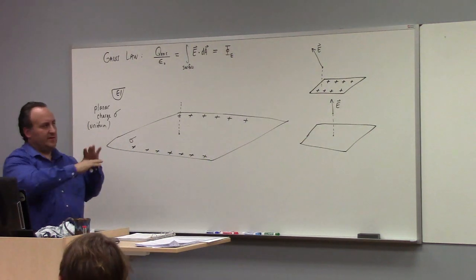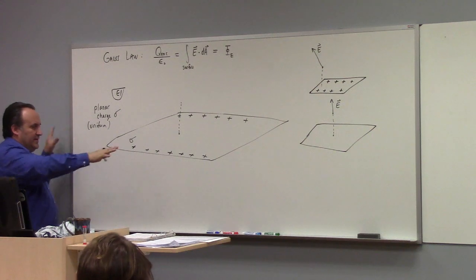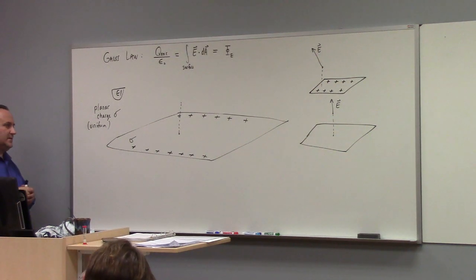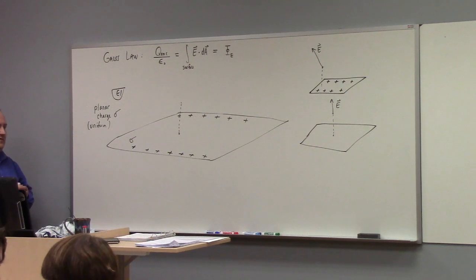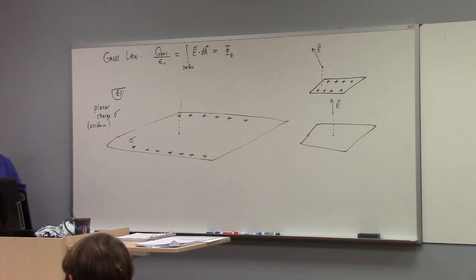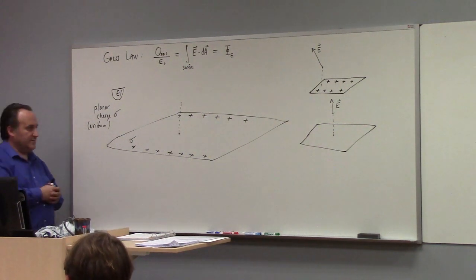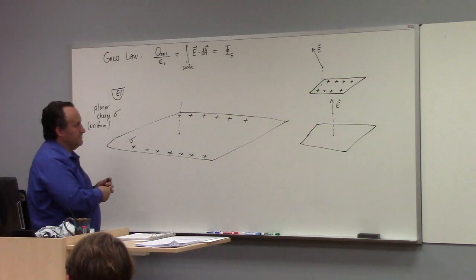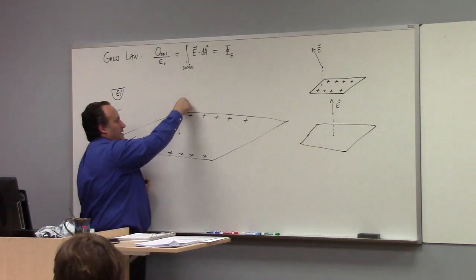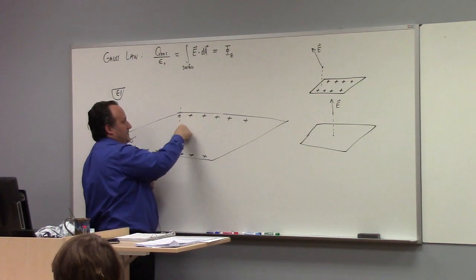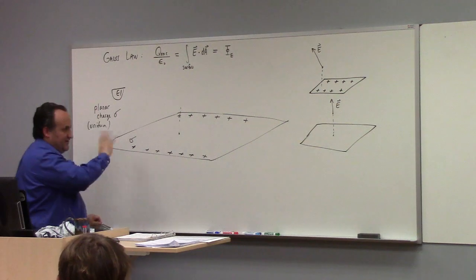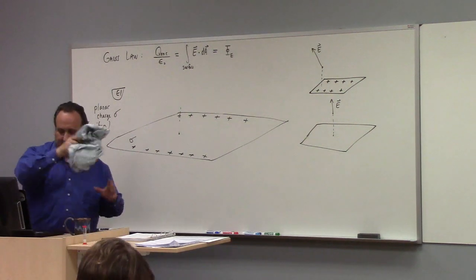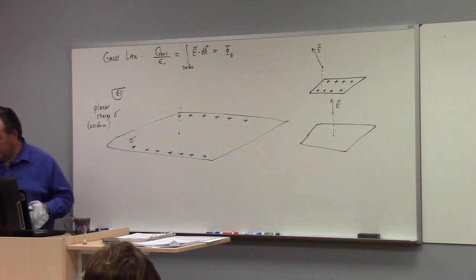We're thinking about a very large collection of charge uniformly distributed over a plane, and we'd like to figure out what the electric field is due to such a distribution of charge. So let's do that — I'm going to erase this picture because I've cluttered it up and try for a new one.